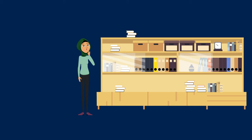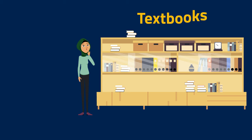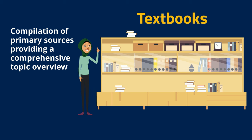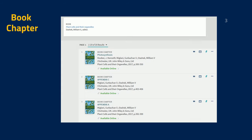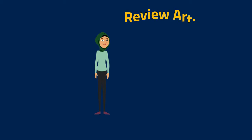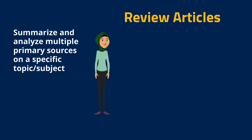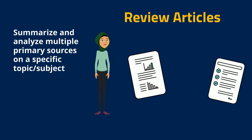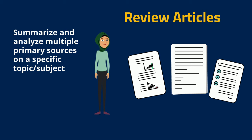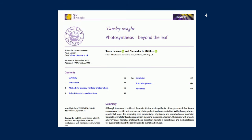Secondary sources in biology include textbooks, which compile knowledge from many primary sources to give you a comprehensive overview of a topic. Sometimes there may not be an entire textbook dedicated to your topic, but rather a chapter within one. There are also review articles, which summarize and analyze multiple primary studies on a specific subject. They're great for getting up to speed on the current state of a field.